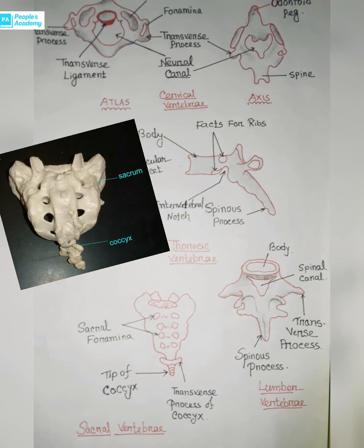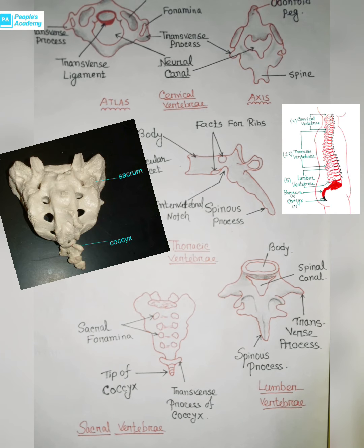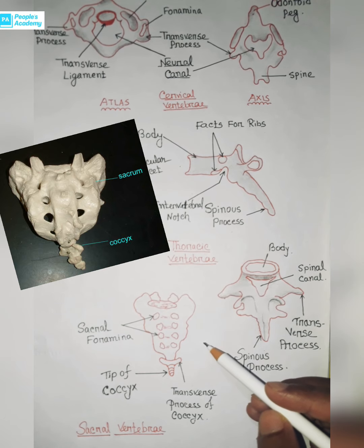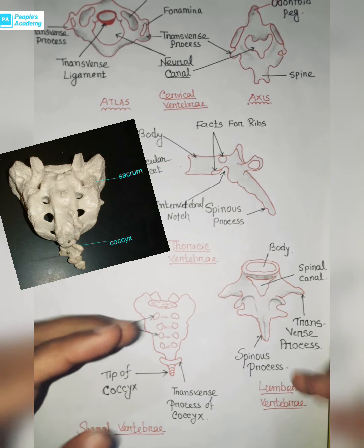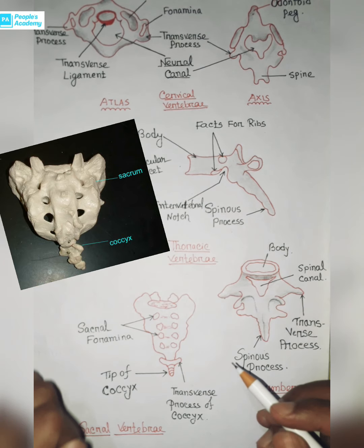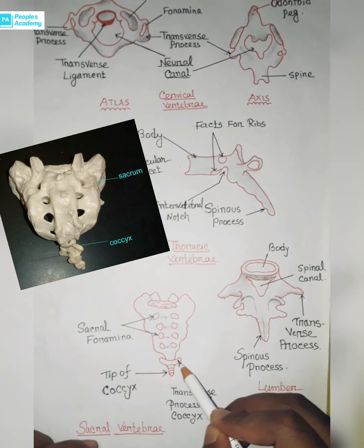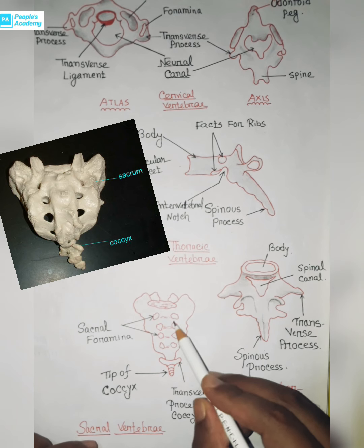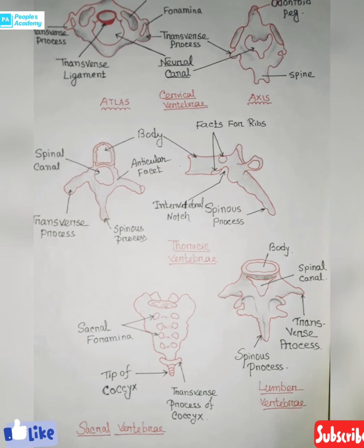Coming to the coccyx: four or five coccygeal bones unite together and form a small vestigial tailbone which is called the coccyx. It is attached to the base of the sacrum. These are the key points you have to remember.